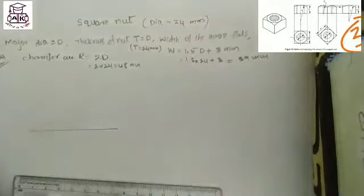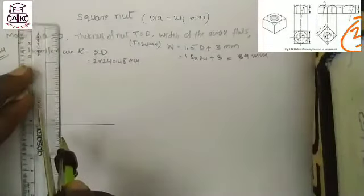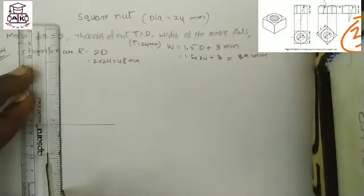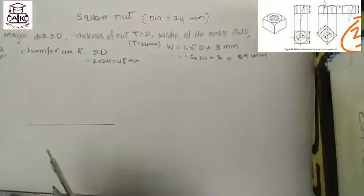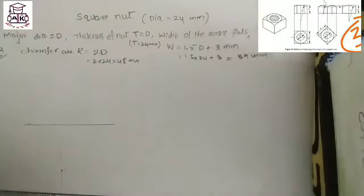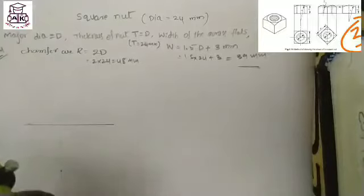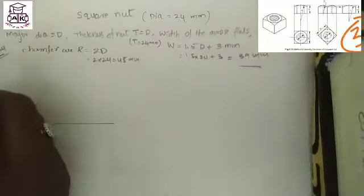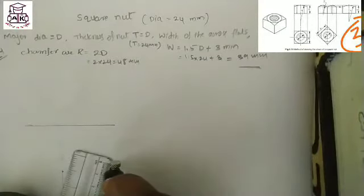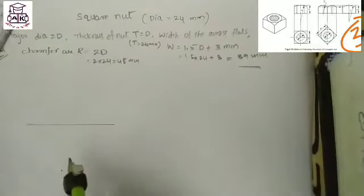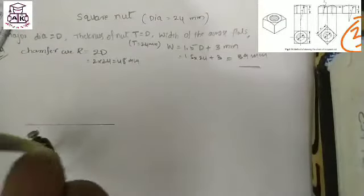First, draw the X-Y reference line. After completing the reference line, draw one circle with dimension W. W equals 39 mm, so take radius 39 divided by 2. With the help of a compass and scale, draw the circle using radius 39/2.